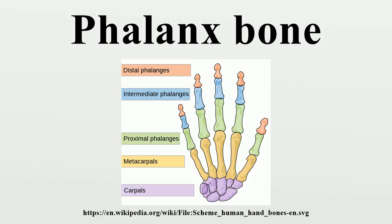Distal phalanx in the hand: the distal phalanges are flat on their palmar surface, small, and with a roughened elevated surface of horseshoe form on the palmar surface, supporting the finger pulp. The flat, wide expansions found at the tips of the distal phalanges are called apical tufts. They support the fingertip pads and nails. The phalanx of the thumb has a pronounced insertion for the flexor pollicis longus, an ungual fossa, and a pair of unequal ungual spines. This asymmetry is necessary to ensure that the thumb pulp is always facing the pulps of the other digits — an osteological configuration which provides the maximum contact surface with held objects.